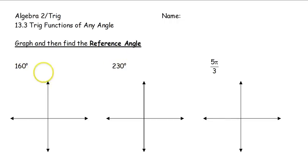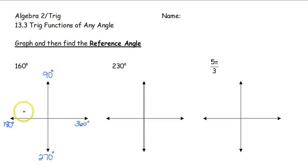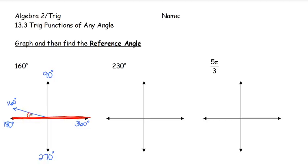We have 160 degrees. We know that 90, 180, 270, and 360 are our axis marks. So if I want 160 degrees, that's just 20 degrees shy of 180 — that is our 160 degree angle mark. The reference angle is the angle made with the x-axis, always with the closest x-axis. So this would be our reference angle, and our reference angle is equal to 20 degrees.